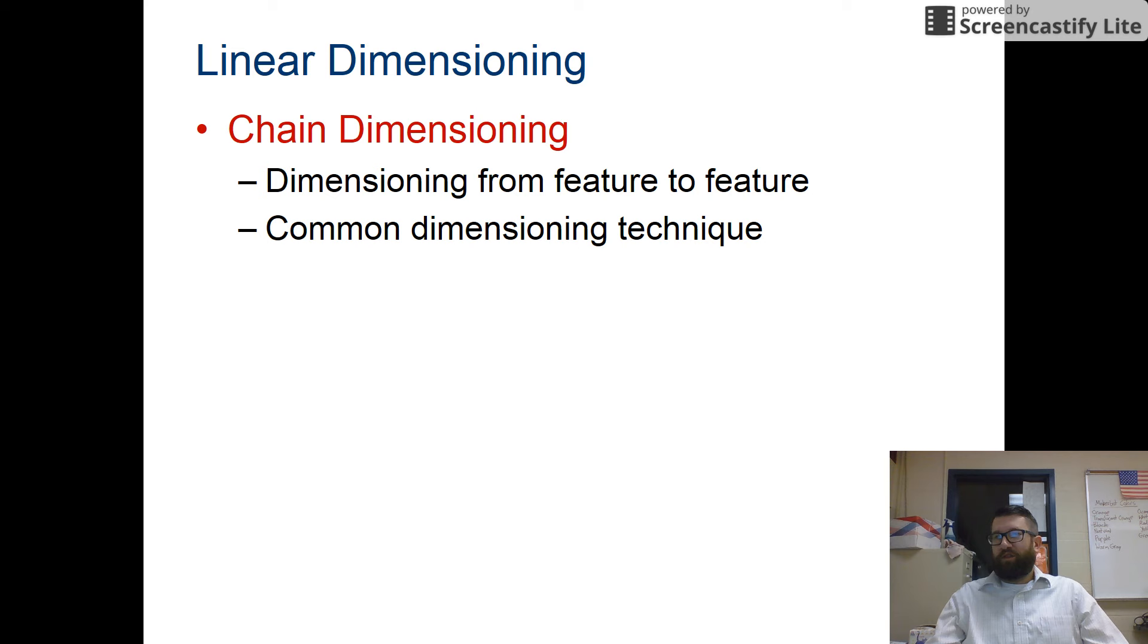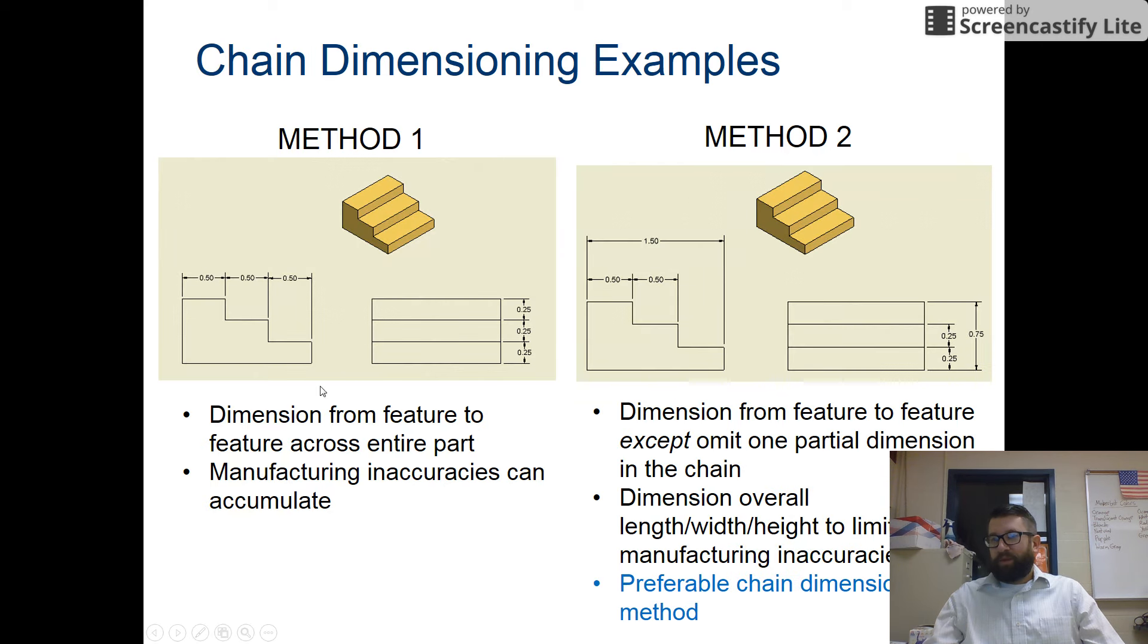So chain dimensioning, this is pretty common. Chain dimensioning features across the entire part. But the inaccuracies can accumulate. So this is not necessarily the preferred method. The preferred method is that you put in an overall dimension, and put in the ones that you need, except for one that makes a difference. So here, overall is 1.5. So each stair step is 0.5. But it's assumed that the difference here, because 0.5 and 0.5 equals 1, and the overall is 1.5, this dimension right here has to be 0.5. So this will eliminate or limit manufacturing inaccuracies, which is something you don't want. So that's why it's preferable.